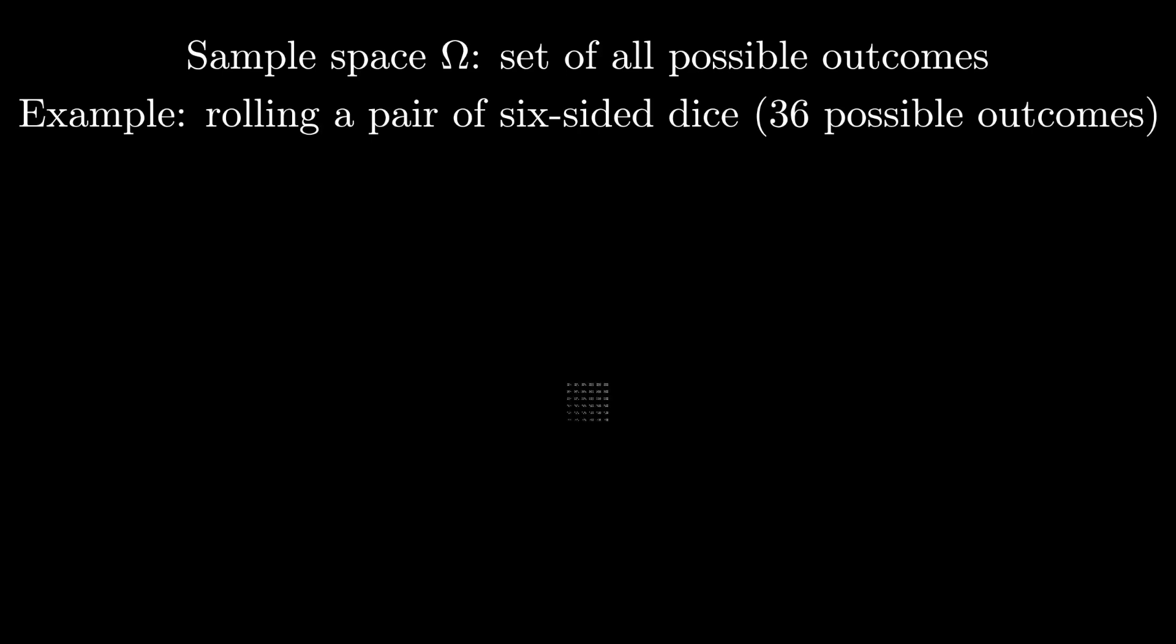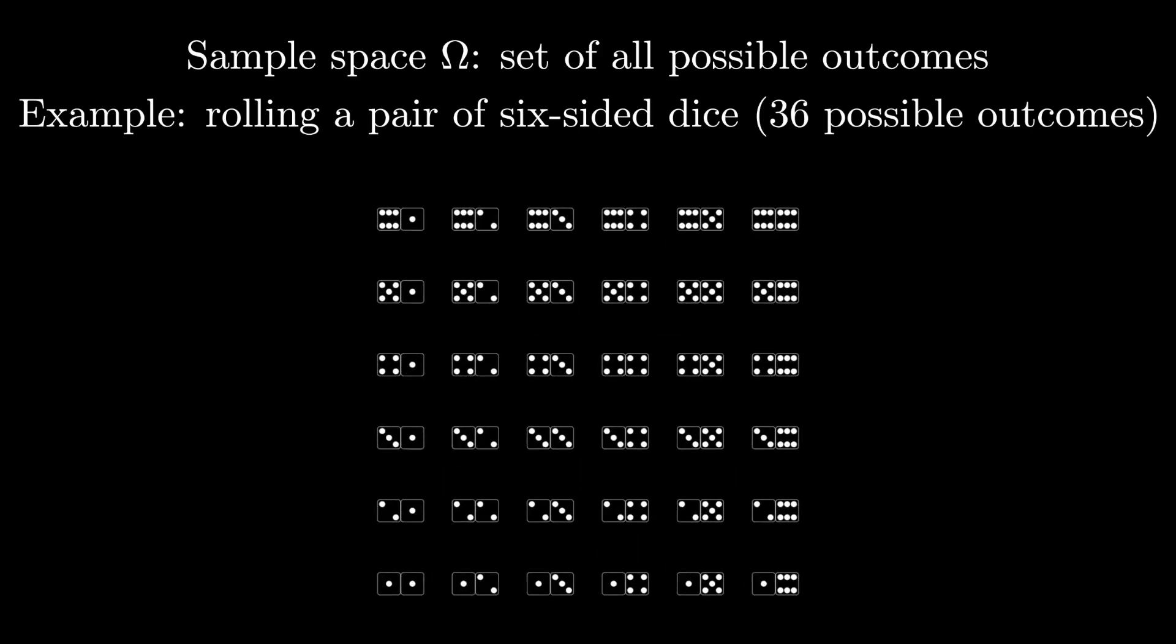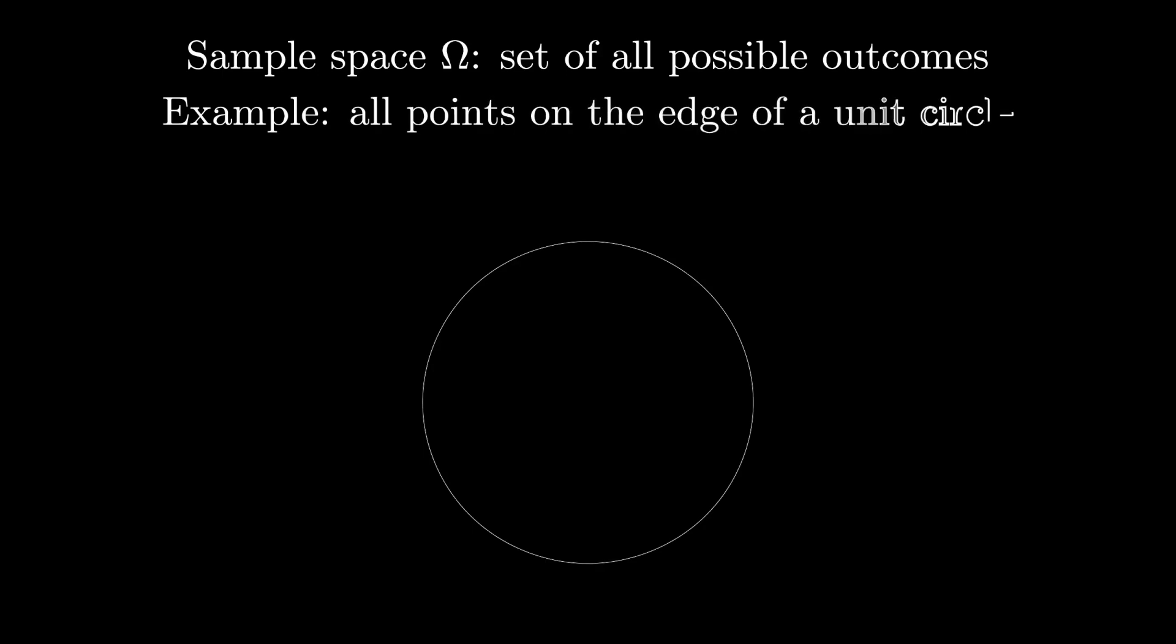Let's start out by talking about the concept of a sample space, omega. One example of a finite sample space is the set of all possible outcomes of rolling two six-sided dice. One example of an uncountably infinite sample space is the set of all points along the edge of a unit circle.